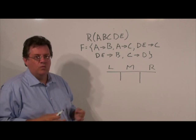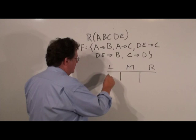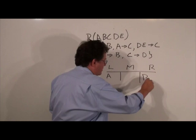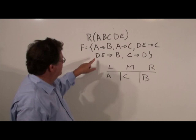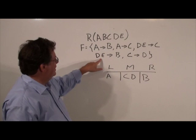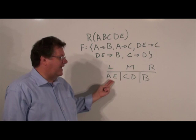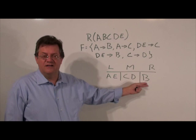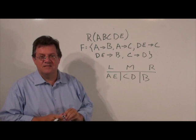On the left-middle-right table, we look at one attribute at a time. A is on the left only. B is on the right only. C is on the left and right, so C goes in the middle. D is on the left and right, so D goes in the middle. E is on the left only, so it goes on the left. So A and E only occur on the left side of the functional dependencies, B occurs only on the right side, and C and D occur on both the left and right.